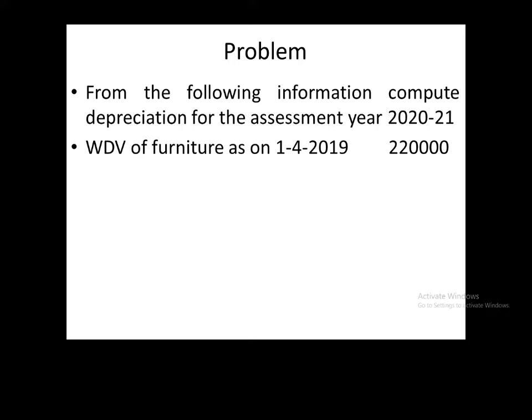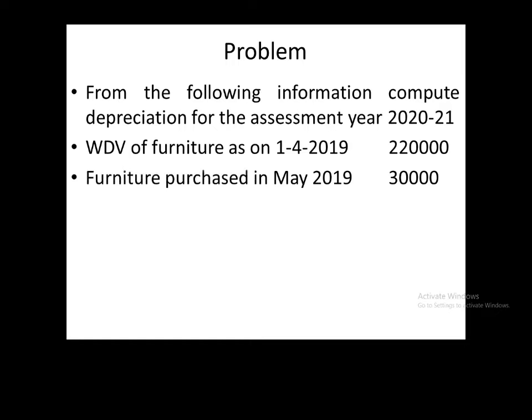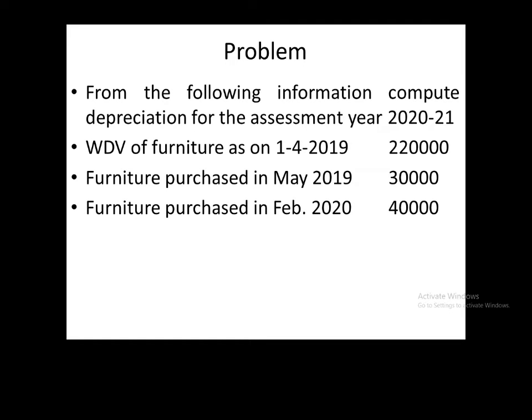The previous year runs from 1-4-2019 to 31st March 2020. Written down value for furniture as on 1-4-2019 is 2,20,000. Furniture purchased in May 2019 is 30,000.